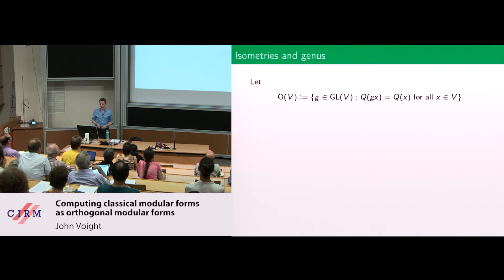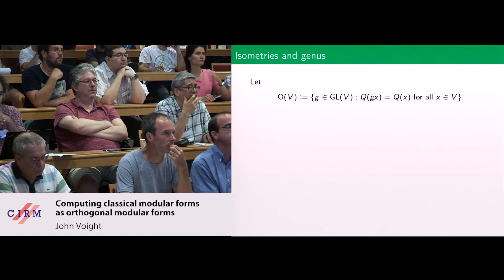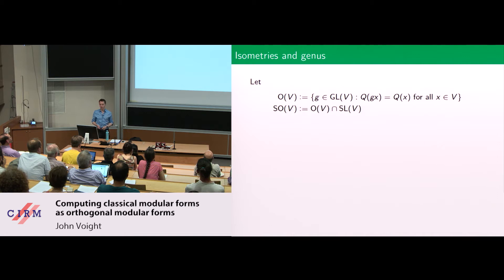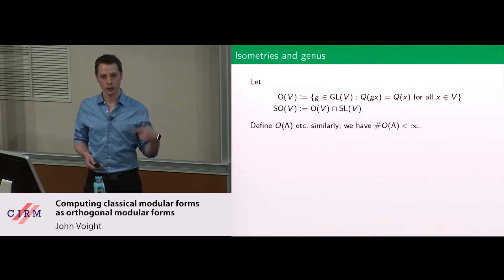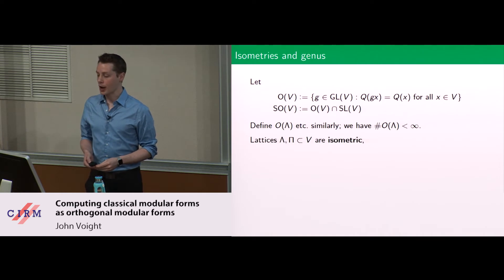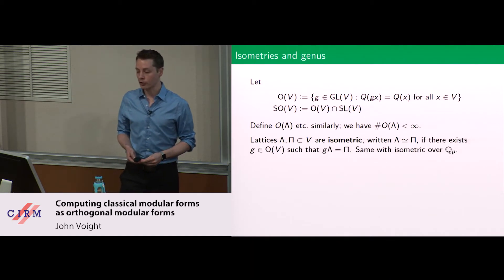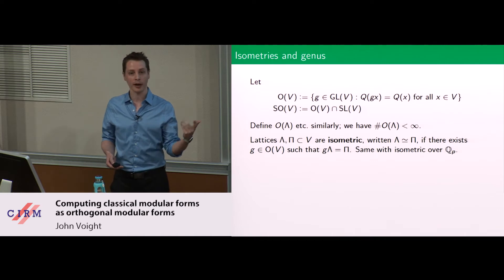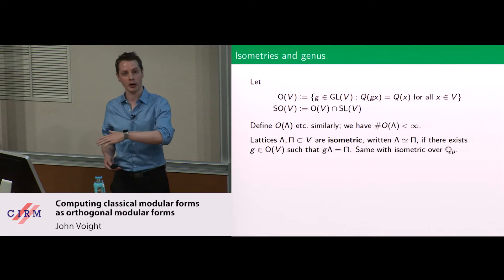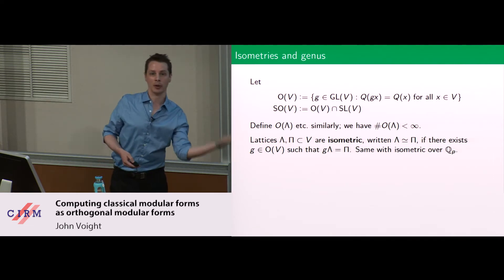Now let me tell you about the genus. We have the basic groups acting on our vector space — we ask for the linear change of variables of V that preserve the quadratic form, and we call that the orthogonal group. We'll also need the special orthogonal group, where we require the determinant to be one. We define O(lambda) as the things that map the lattice to itself. Since we have a lattice inside a positive definite quadratic space, that's a finite group.